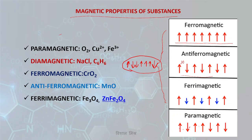In paramagnetic substances, electrons are unpaired and the substance is weakly attracted by a magnetic field. In diamagnetic substances, all electrons are paired and the substance repels the magnetic field. This concludes the magnetic properties section.